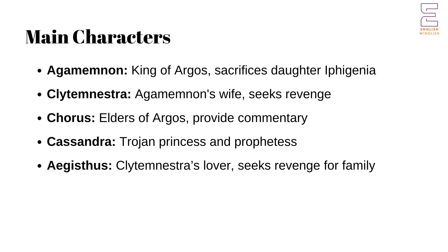Chorus: the elder citizens of Argos who provide commentary on the play's action and serve as advisors to Clytemnestra. Cassandra: a Trojan princess and prophetess, brought to Argos as Agamemnon's slave. Despite her gift of prophecy, she is doomed to be disbelieved. Aegisthus: Agamemnon's cousin and Clytemnestra's lover, seeking revenge for his family's past injustices.